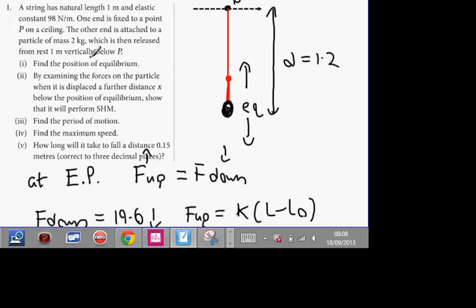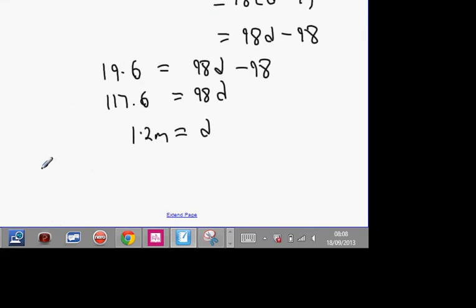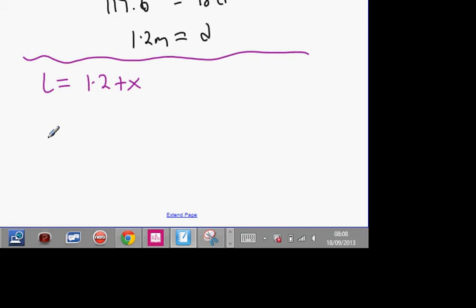Now what we know is that it's 1.2 meters all the way down. And all of a sudden from this question, by examining the forces on the particle when it's displaced to a further distance X below the position of equilibrium, show it will perform simple harmonic motion. We've done part 1. Now we're doing part 2. This is the equilibrium point here. I'm going to have to do a further extension X. The particle is now located a further distance down. So it's no longer at equilibrium.